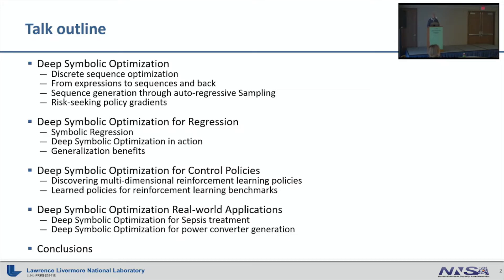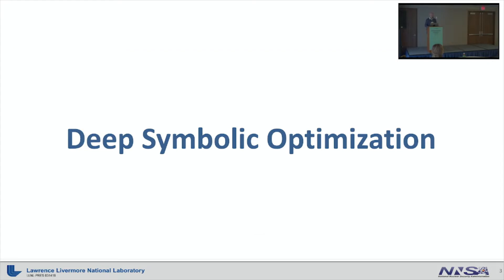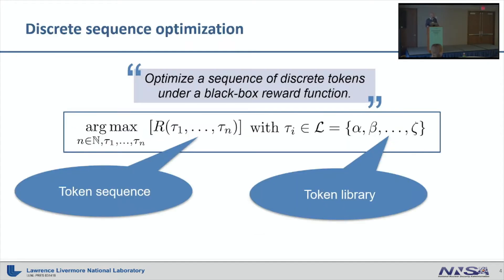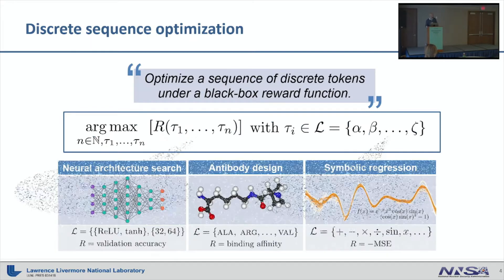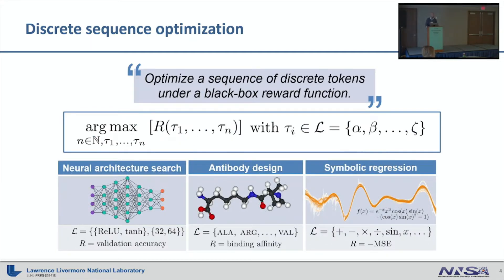Our work is concerned with discrete sequence optimization, and many machine learning problems fall into this category. We want to optimize for a variable-length sequence of discrete tokens, where each element in the sequence is sampled from a library of possible tokens. Most of the time we are only interested in the best-performing sequence given a black-box reward function. For example, in AutoML applications like neural network architecture search, tokens represent the architecture hyperparameters of a neural network and the reward is the validation accuracy.